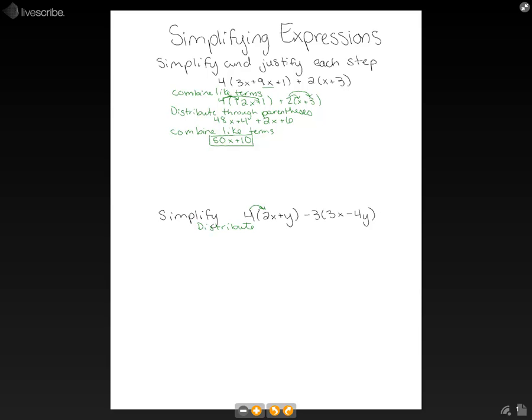So we're going to have our 4 times our 2x, our 4 times our y, our negative 3 times our 3x, and our negative 3 times our 4y. And as you look over at this last one, negative 3 times negative 4y, we have a negative times a negative, so we're going to get a plus.